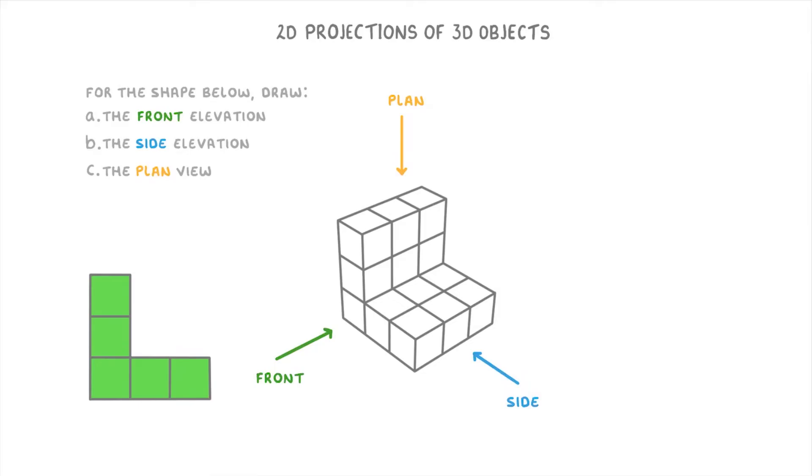Meanwhile from the side you'll be able to see all of these 9 squares, and so the 2D projection would just be a 3x3 set of blocks like this.